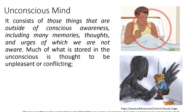The third and deepest level of the mind is the unconscious level. It consists of those things that are outside of conscious awareness, including many memories, thoughts, and urges of which we are not aware. Much of what is stored in the unconscious is thought to be unpleasant or conflicting — for example, sexual impulses that are unacceptable. While stored out of our awareness, these elements are nevertheless thought to influence our behavior, although we cannot easily access the information stored in the unconscious mind.